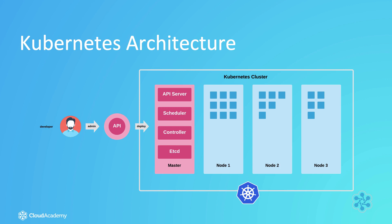AKS installs and configures the API server, scheduler, controller and etcd services for you. The AKS control plane is critical to the overall stability and running of the Kubernetes cluster — without it, things just don't work. The key point here is that AKS is managing the control plane for you. Since AKS is performing this as part of its managed service, the VMs that make up the control plane will not show up within the Azure AKS portal. They are essentially abstracted away from you.